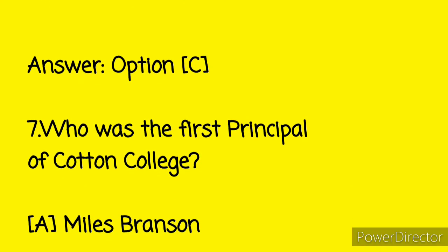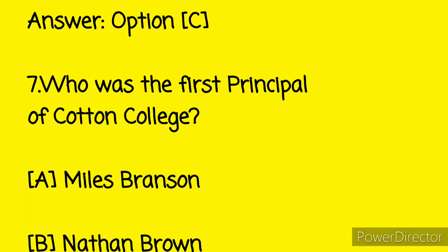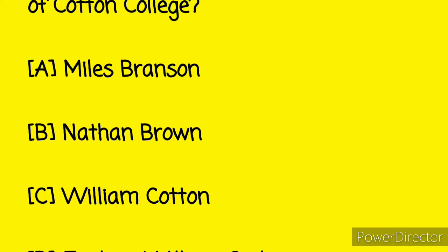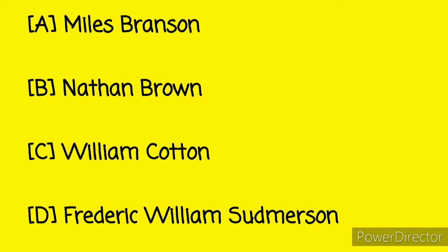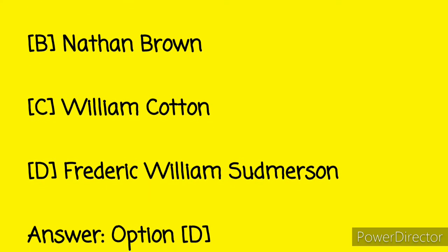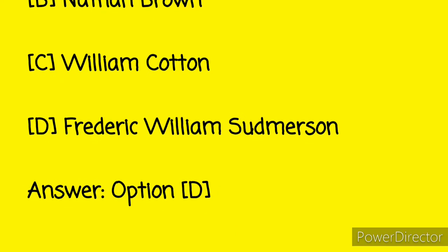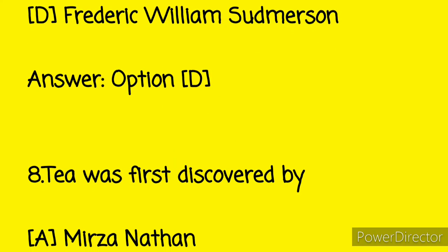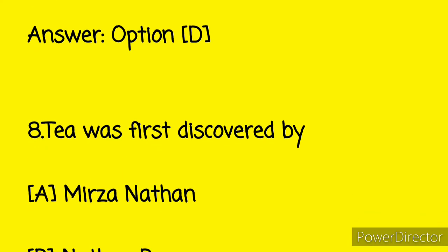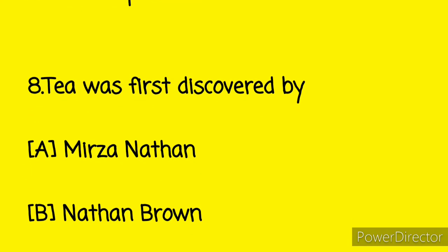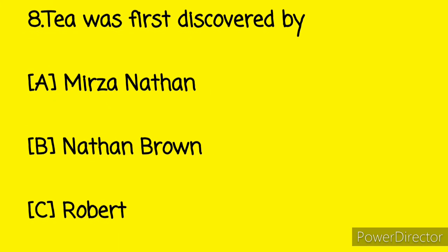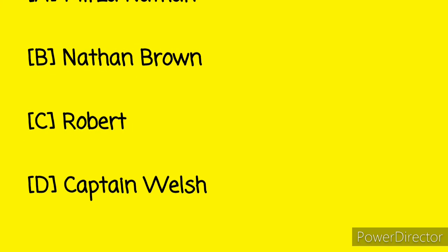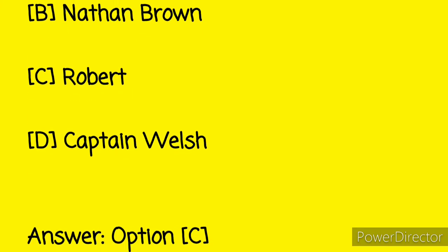Next question: who was the first principal of Cotton College? Option B: Nathan Brown, Option C: William Cotton, and Option D: Frederick Williams. And here the answer is Option D. The next question: tea was first discovered by Option A: Mirza Nathan, Option B: Nathan Brown, Option C: Robert, and Option D: Captain Wells. And here the answer is Option C.